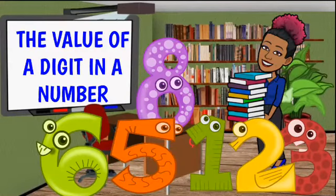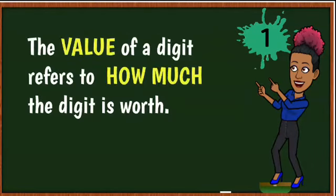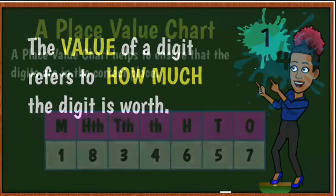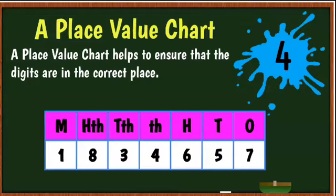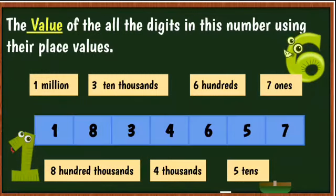Welcome to the lesson: the value of a digit in a number. The value of a digit refers to how much the digit is worth. A place value chart helps to ensure that the digits in any number are in the correct place.